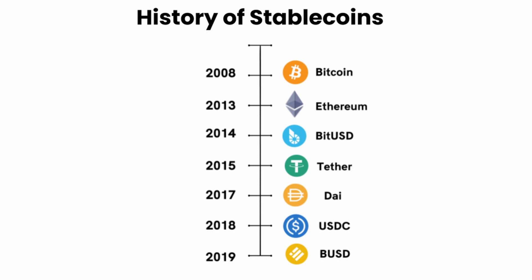Stablecoins started the year later, in 2014, with BitUSD, a stablecoin linked to the US dollar, with the objective of one BitUSD having a value of one US dollar. BitUSD had a mechanism quite similar to TerraUSD, having a stablecoin and a stabilizing cryptocurrency.